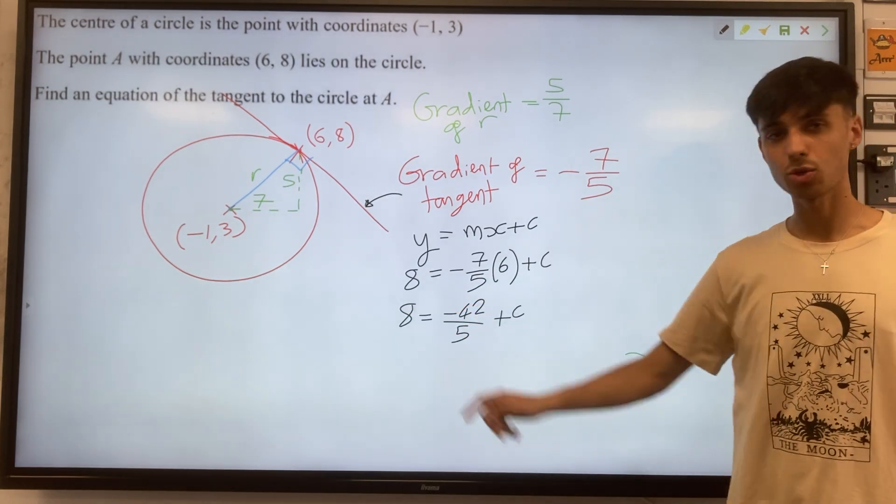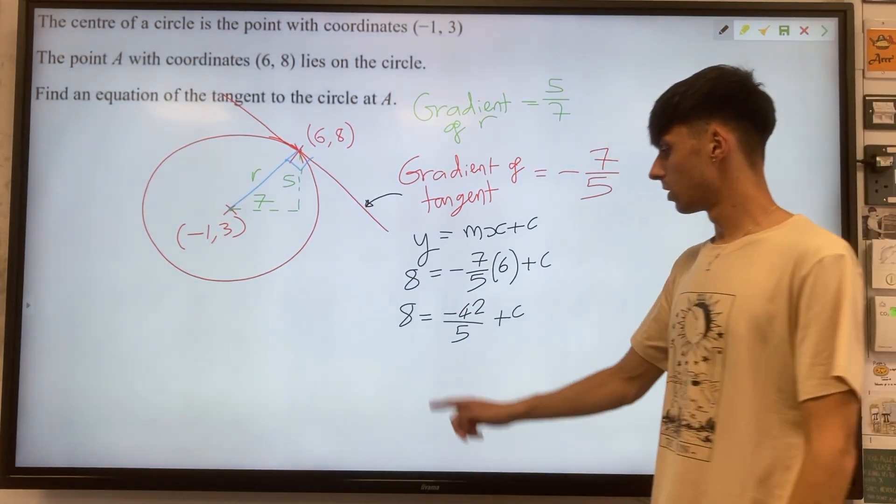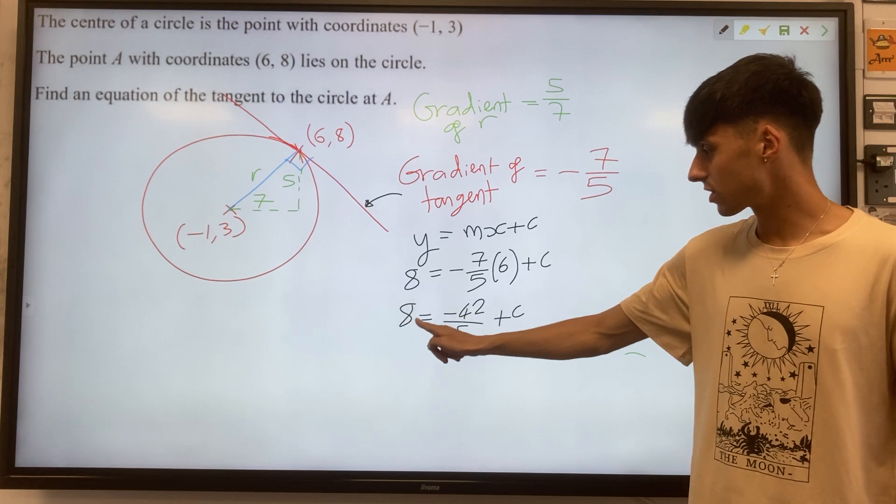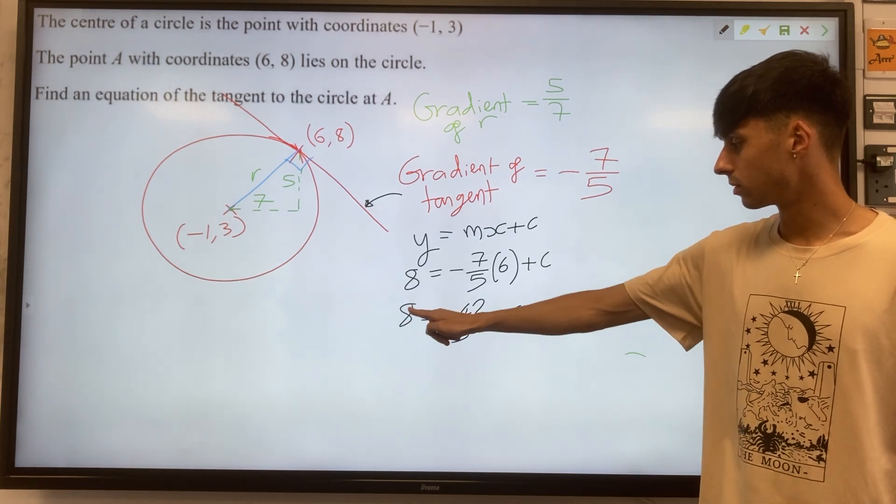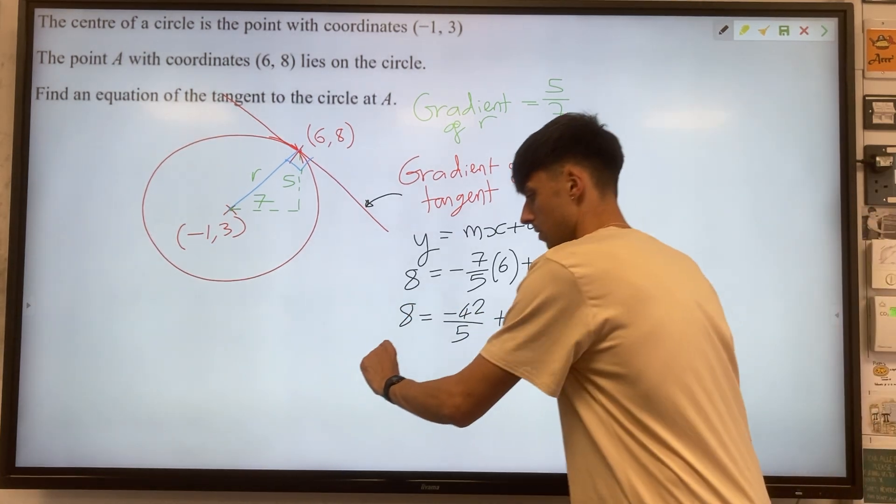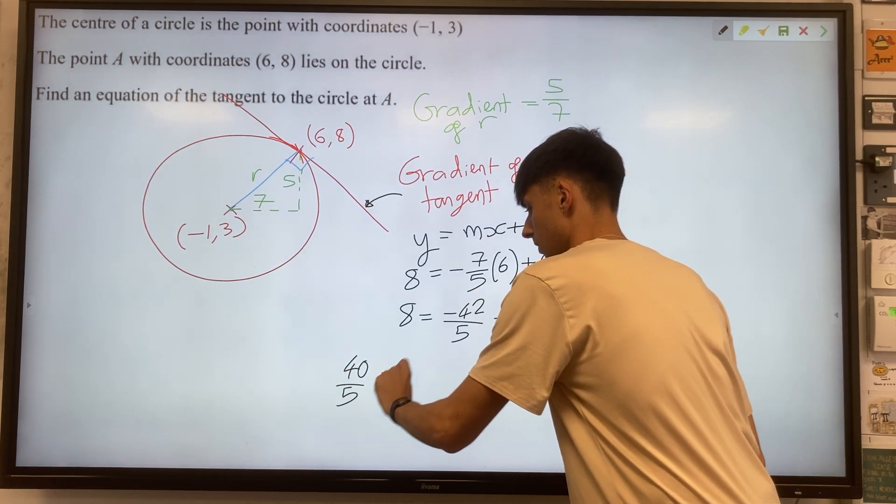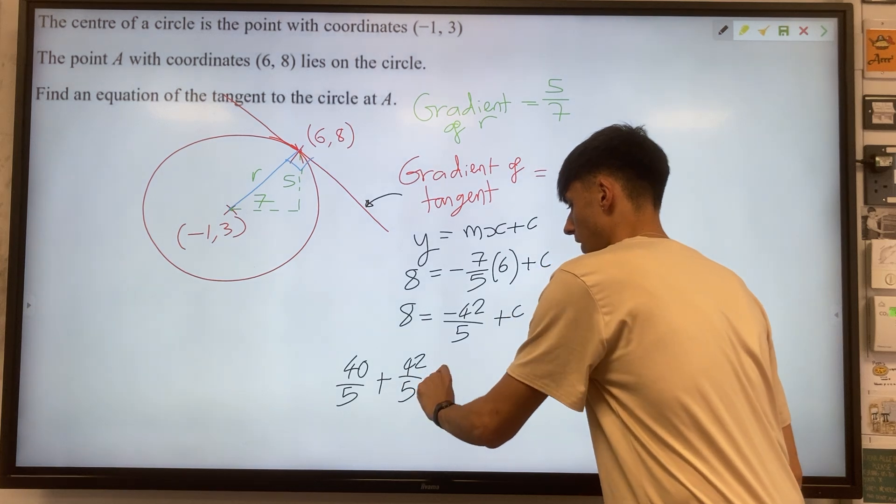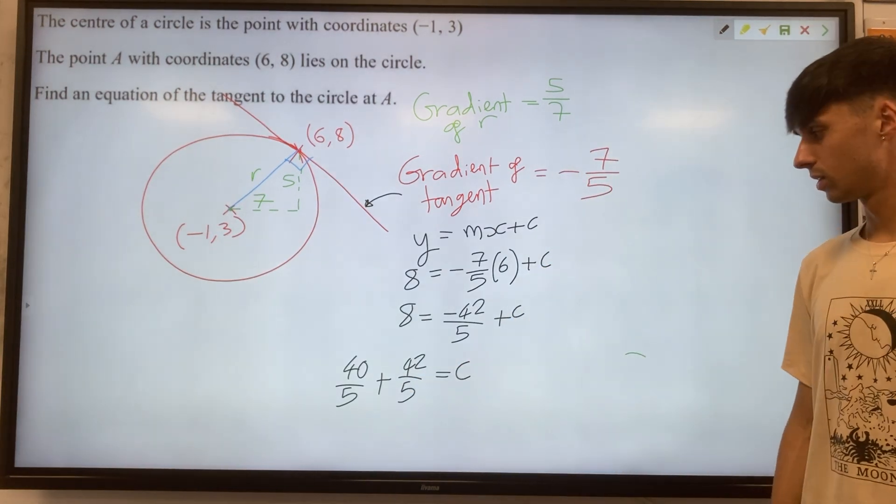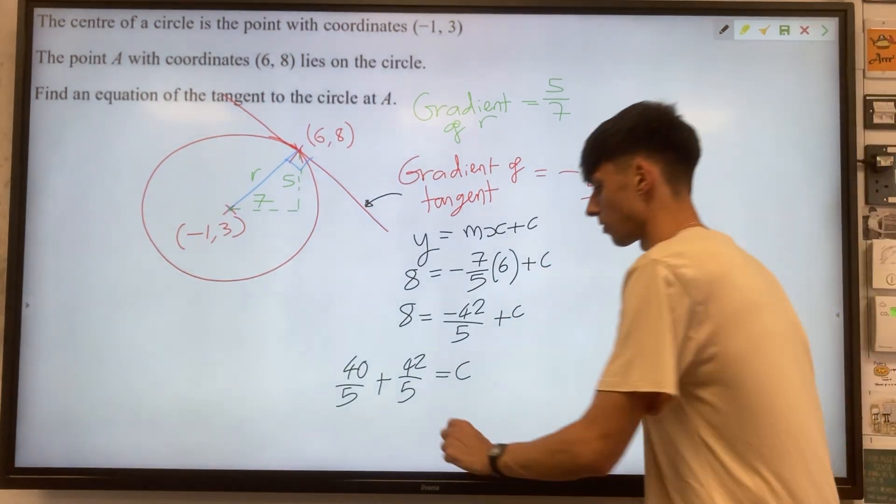We can move our 42 over 5 over to here. So let's actually change our 8 in terms of something divided by 5. So our 8 we could write as 40 divided by 5, plus our 42 over 5 will give us c. So c is going to be 82 over 5.